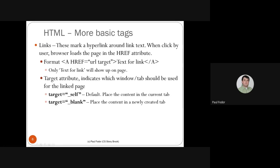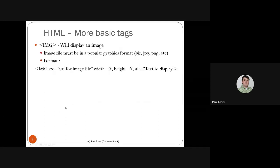The target attribute indicates which window or tab should be used for the linked page. 'target=_self' means open the linked page in the current tab — this is the default behavior. 'target=_blank' means the new page opens in a newly created tab. Images can display with the img tag, which requires a source file with extension gif, jpg, png, and so on. Most browsers accept all common compressed image formats as well as uncompressed bitmap formats.